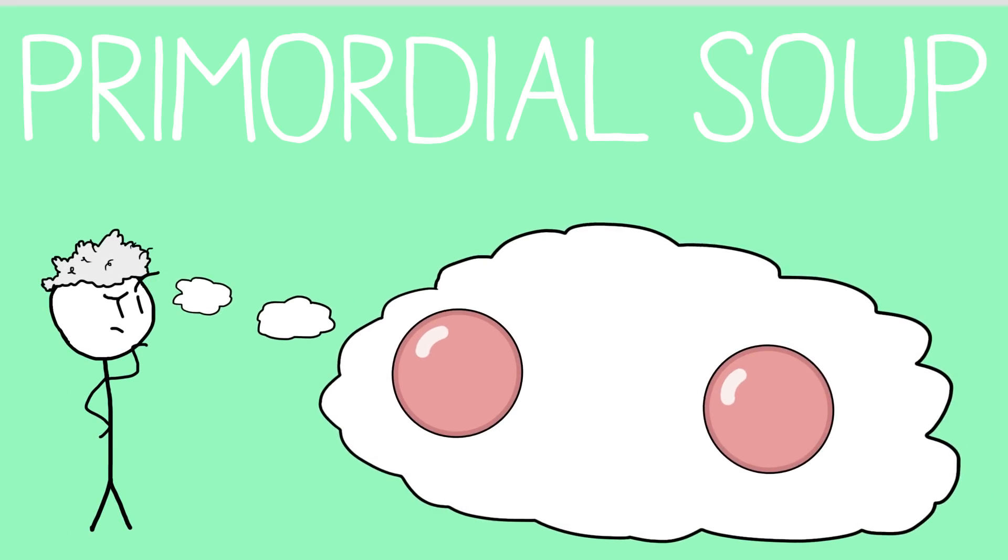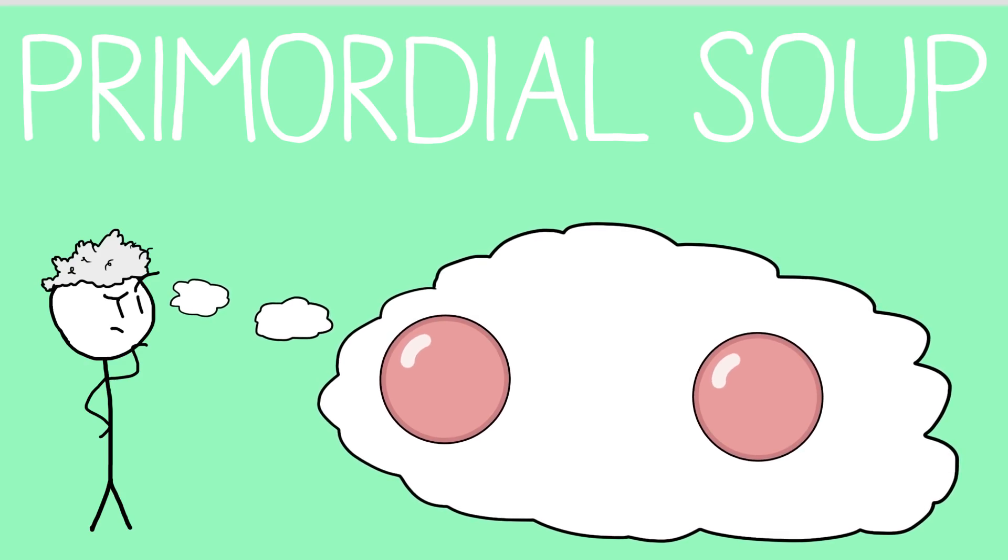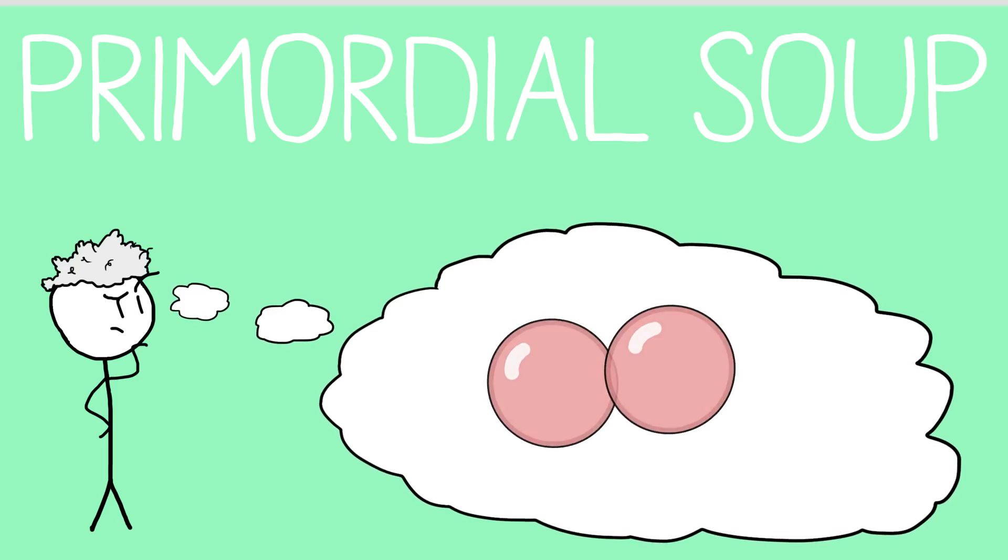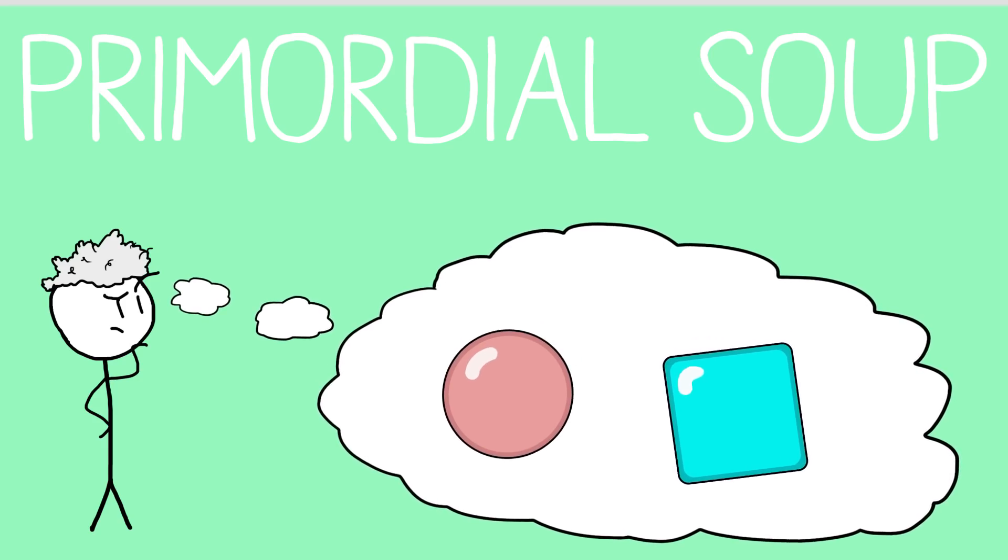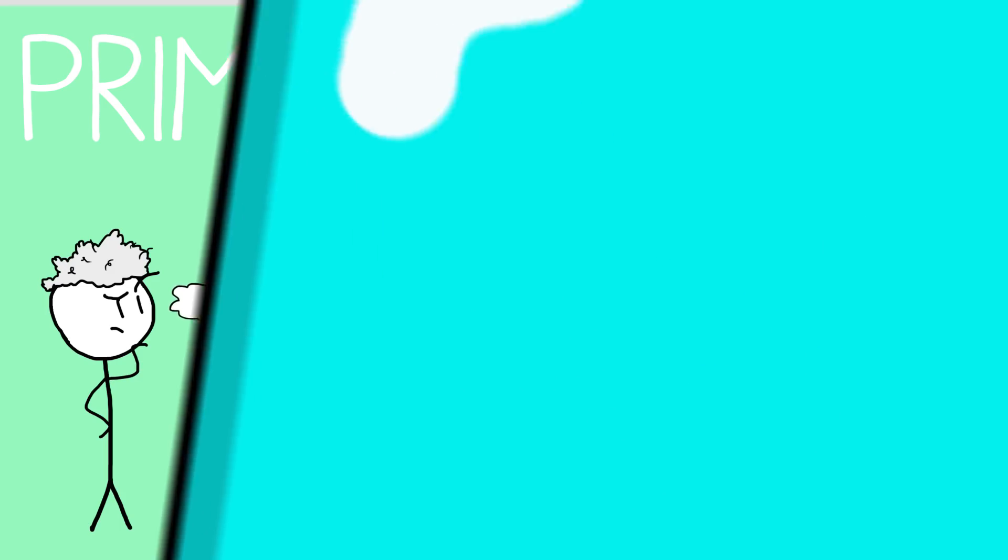We'll start with the ever-popular primordial soup theory. Since its inception in 1924, proponents of this theory have suspected that the biological building blocks of life could have spontaneously come about from the inorganic ingredients available on early Earth. This school of thought has undergone many revisions and fallen in and out of favor since its early stages, but the core reasoning is this.